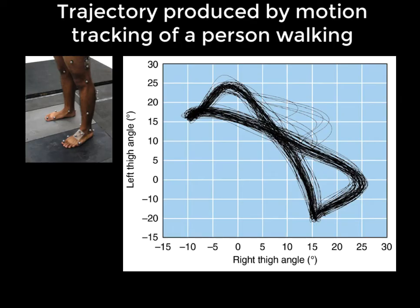As a final and important example, we return to the case of the trajectory produced by motion tracking technology as a person walks on a treadmill. As we can see here in the plotted graph, the trajectory of left thigh angle and right thigh angle as the person walks on the treadmill forms this roughly repeating pattern. The sort of diagonal figure-eight pattern, if we can call it that, would be in this case an example of an attractor.